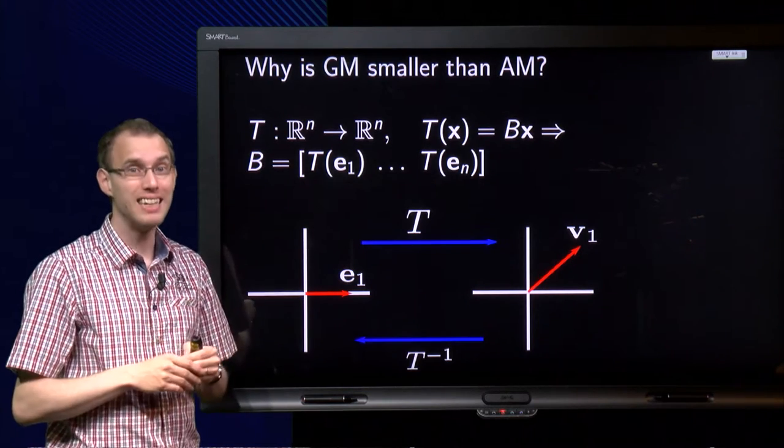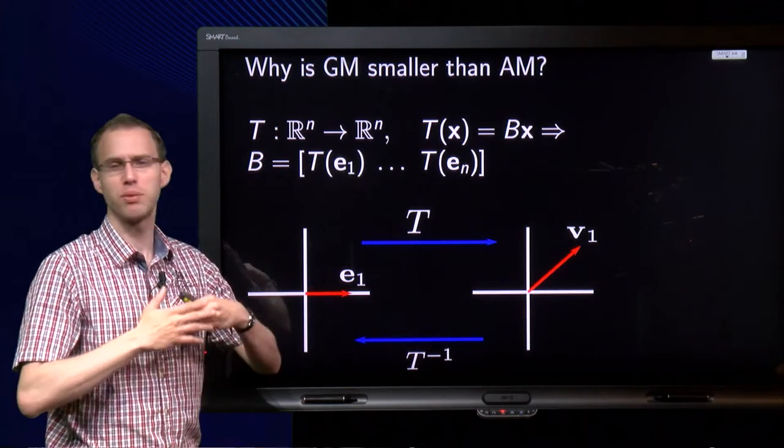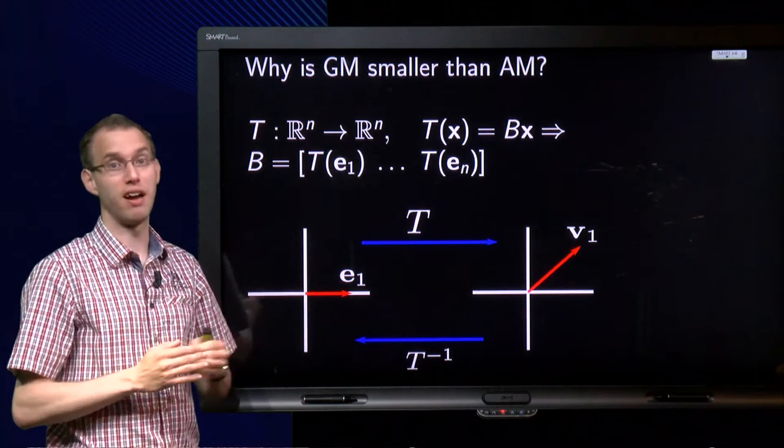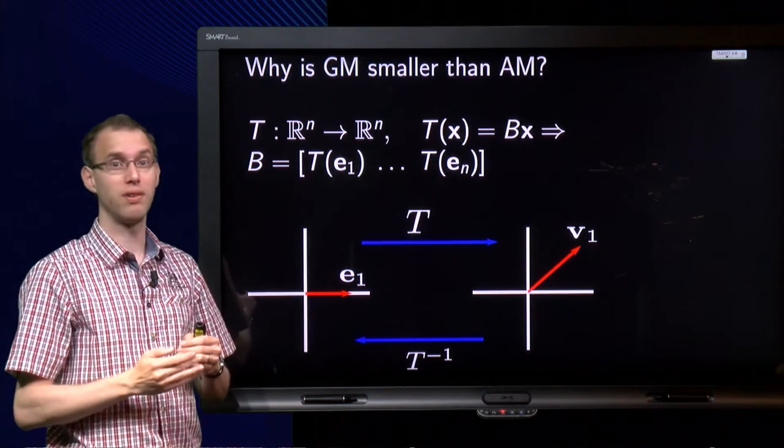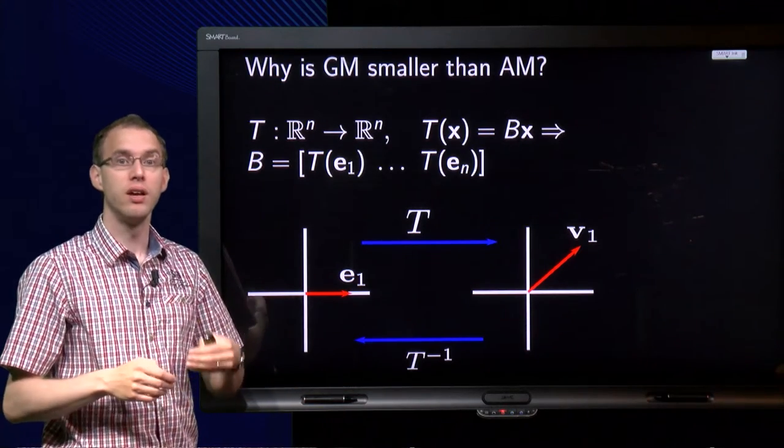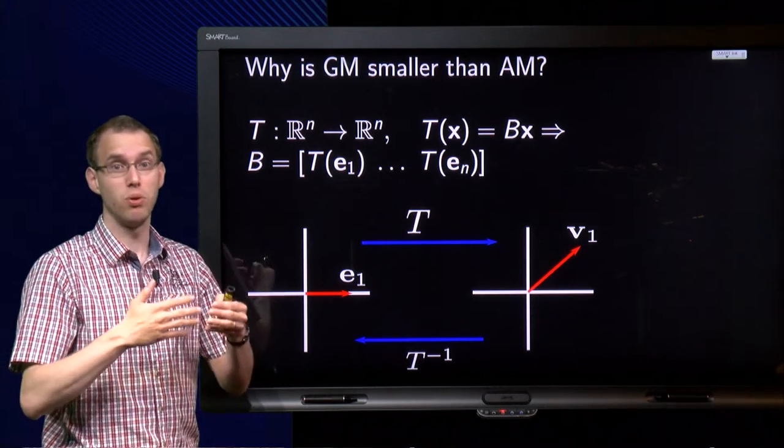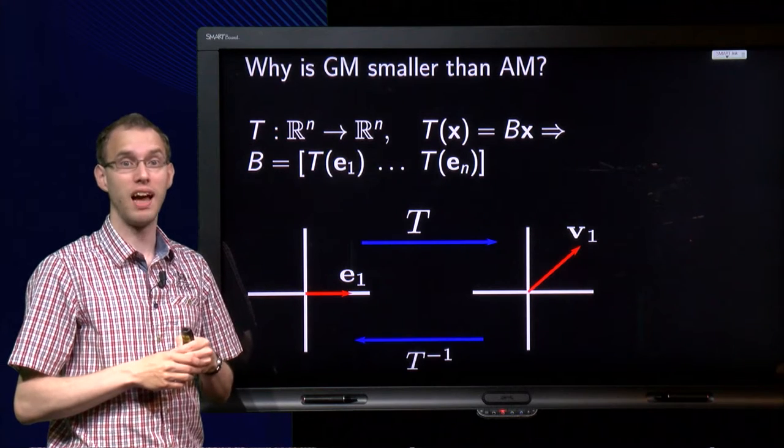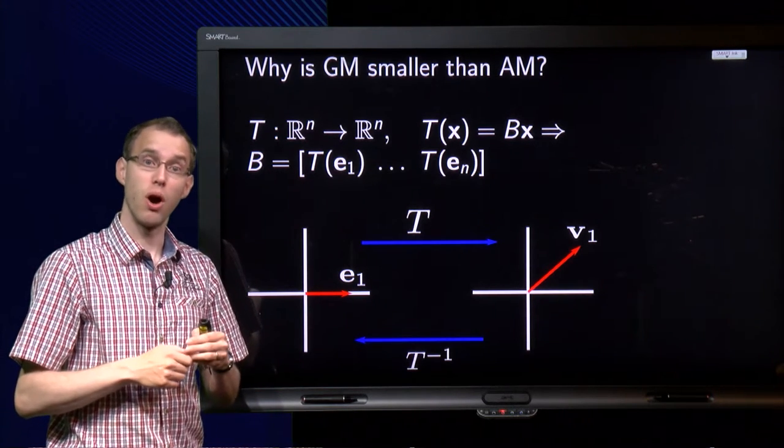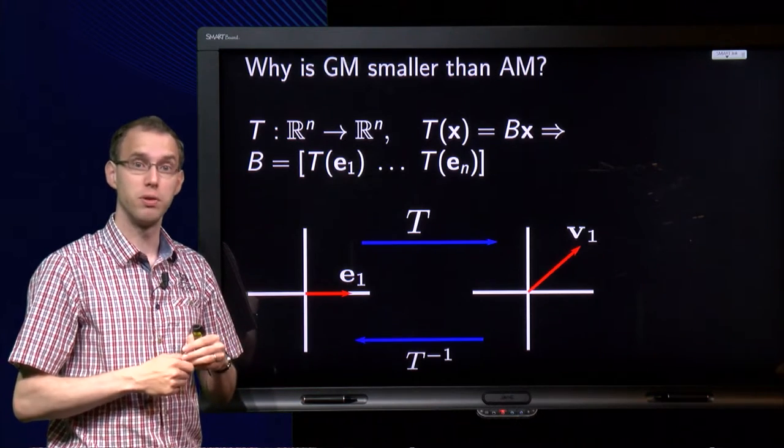You can have at most n independent eigenvectors in Rn. But why can't we have something like this? Say a 5 by 5 matrix with two eigenvalues with algebraic multiplicities 3 and 2. If the first one would have a geometric multiplicity of 2, then there is still room for three independent eigenvectors for the other eigenvalue. So the other one could have a multiplicity of 3.